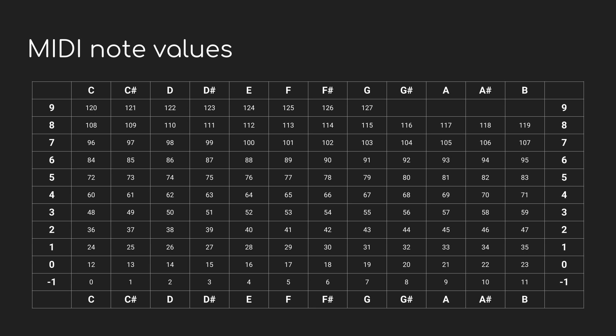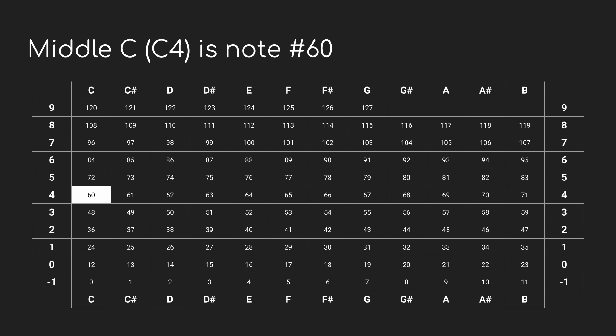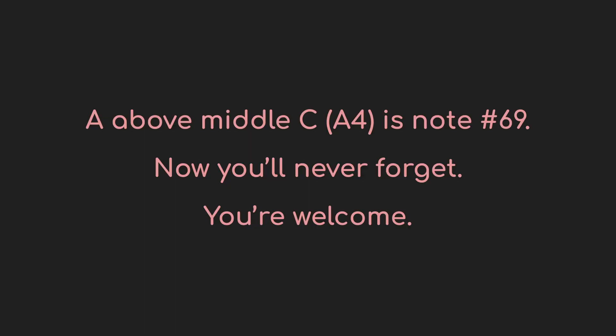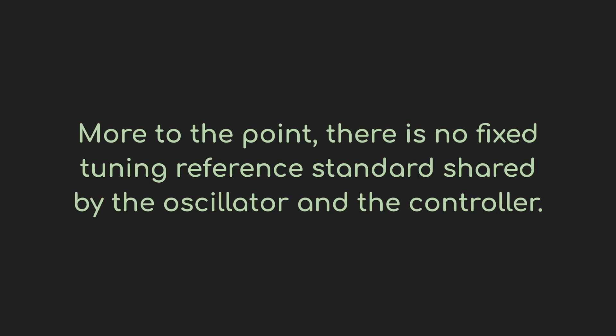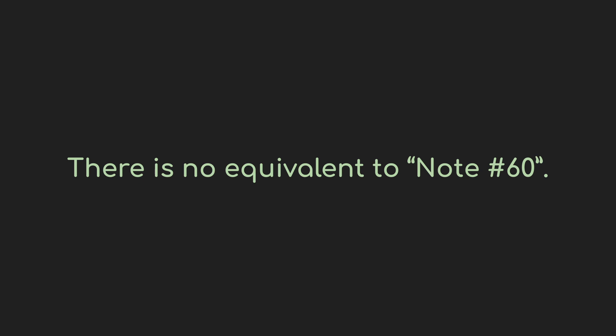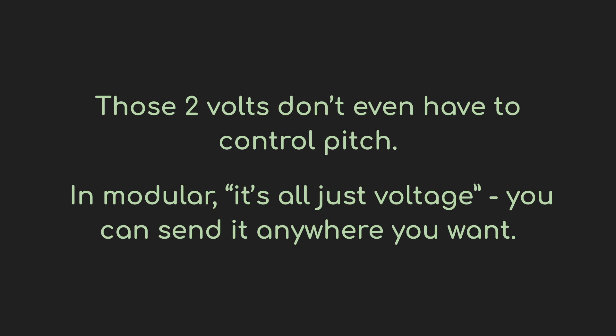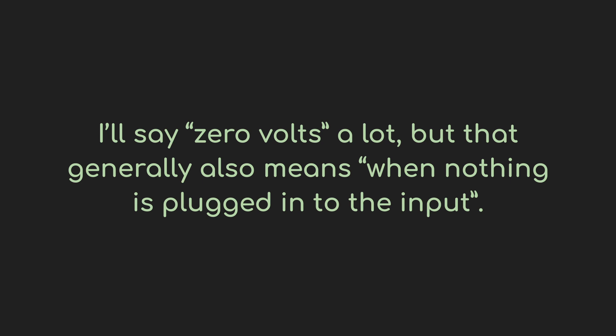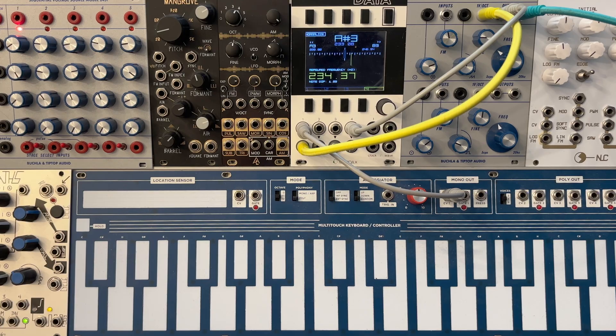In MIDI, each key has its own specific note number, and that note number represents a specific pitch. Middle C is MIDI note number 60, and number 60 represents that pitch specifically. Fire up a MIDI synth, hit middle C, and that's the note that'll sound. Give it the same input, it's going to play the same note. But modular doesn't work like that. The thing that's outputting the pitch information is separate from the oscillator that's actually making the sound. You can look at a keyboard and say you're playing a C, but really you're not. We just saw that the keyboard was just outputting two volts, and the oscillator that started out tuned to A-sharp just jumped up two octaves from those two volts.